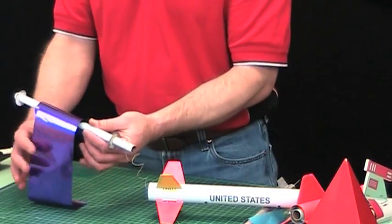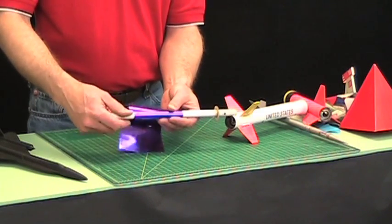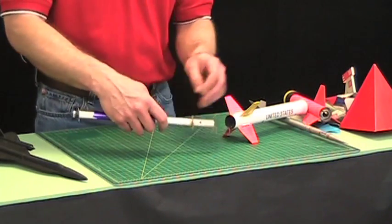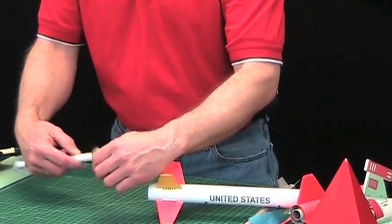This one has a streamer. A streamer you can just wrap around. And again, like before, I like to have the shock cord wrap around the front of the tube like this.